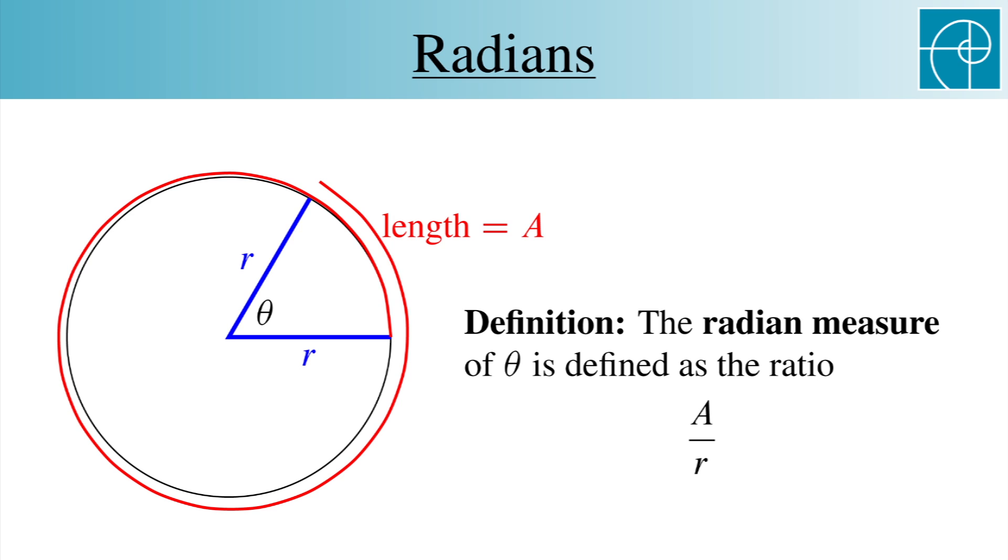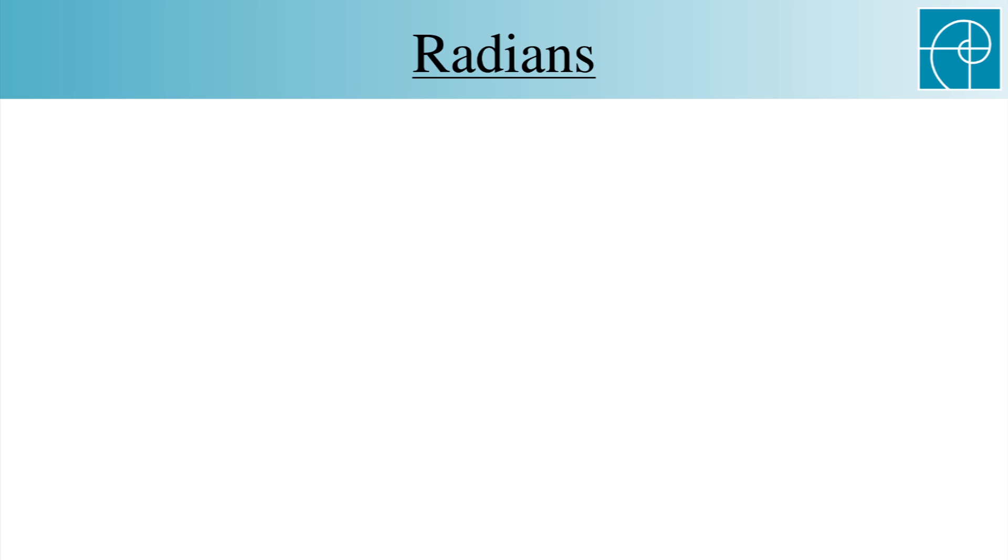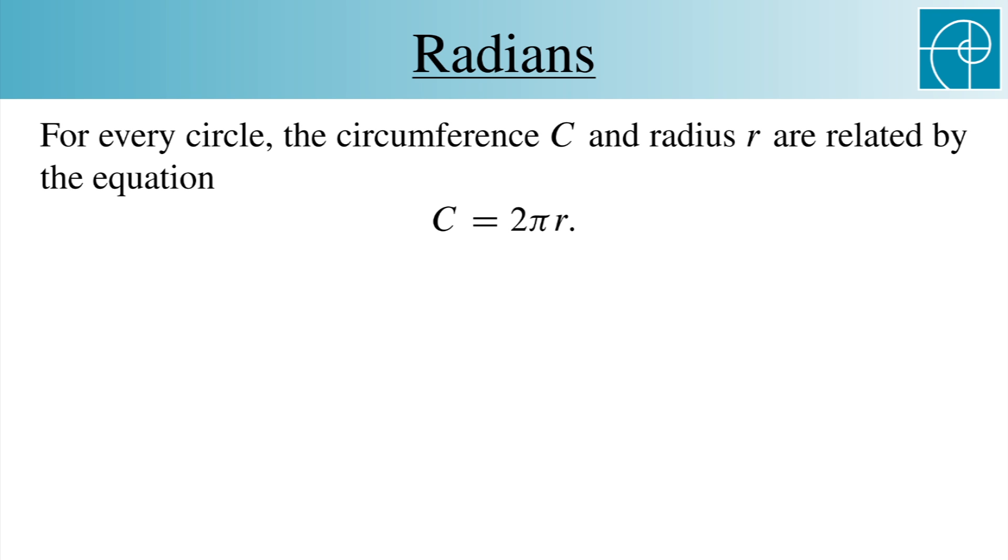So let's compare radians to degrees. First, we'll need to find how many radians are in the circle. In other words, how many radians are in 360 degrees. To do this, all we need to know is the relationship between the circumference and the radius of a circle, which is c equals 2 pi r, or simply c equals 2 pi for a unit circle.